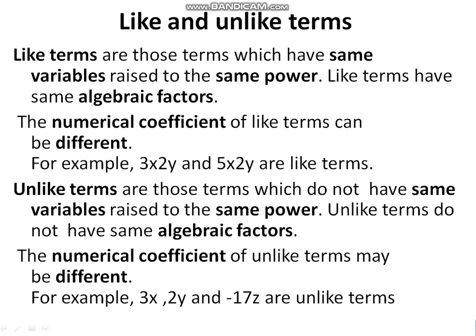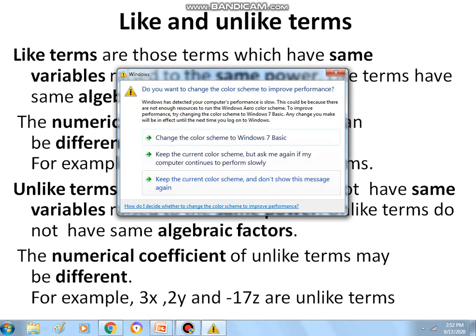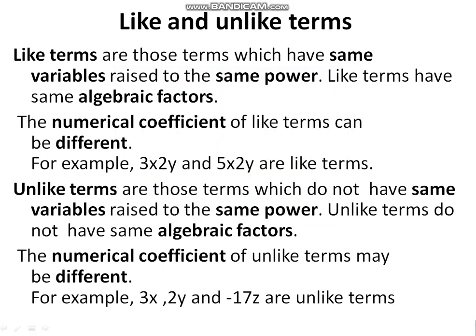Next are like and unlike terms. Like terms are those terms which have the same variable raised to the same power. Both the power and the variable must be the same. The numerical coefficient of like terms can be different. For example, 3 times 2y and 5 times 2y — here 2y is the same term, but 3 and 5 are the different numerical coefficients.